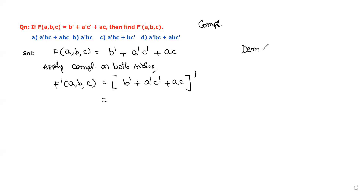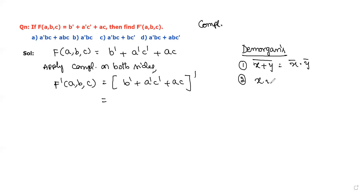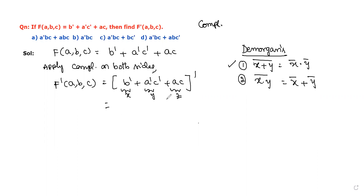Whenever any boolean function has a whole bar, it is better to use De Morgan's laws. There are two types: the first is (x + y)' = x' · y', and the second is (x · y)' = x' + y'. Our expression is in the form of the first equation.